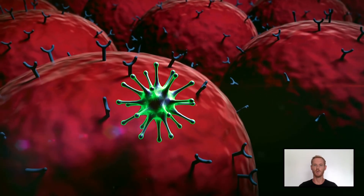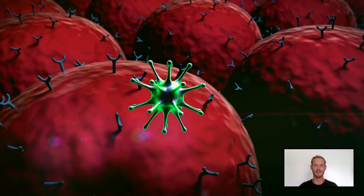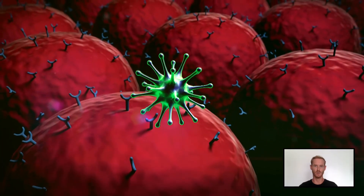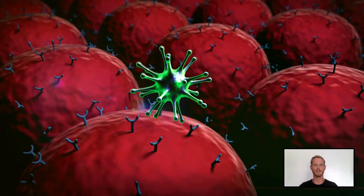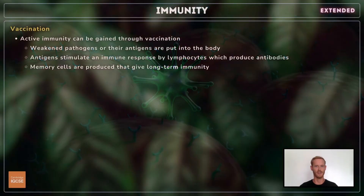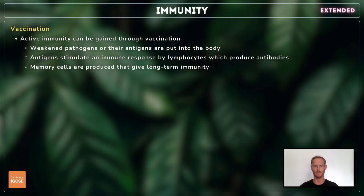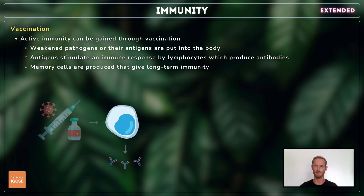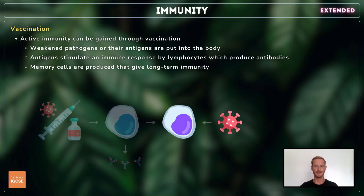Whenever an individual is exposed to a pathogen to which they haven't yet gained an immunity, the patient could suffer symptoms or even die before the white blood cells have had time to act. To prevent this, vaccinations can be used to gain an active immunity beforehand. Weakened pathogens or their antigens are introduced to the body by injection or swallowing, stimulating an immune response by lymphocytes, which produce the appropriate antibodies and then become memory cells. If the person is exposed to the pathogen later, they already have a long-term active immunity, which stops the disease from developing.